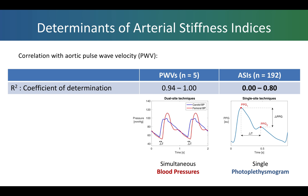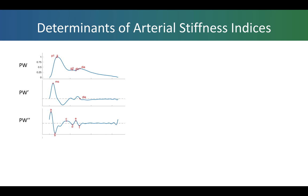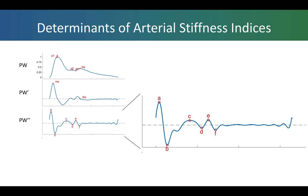Looking more closely at these, they function by analysing the shape of the pulse wave. The top plot shows the original pulse wave with various points identified on it, and the second and third plots show the first and second derivatives. One particular arterial stiffness index uses the second derivative: the modified ageing index, which takes amplitudes from a few of the points on the second derivative and calculates an index proposed to be related to arterial stiffness.